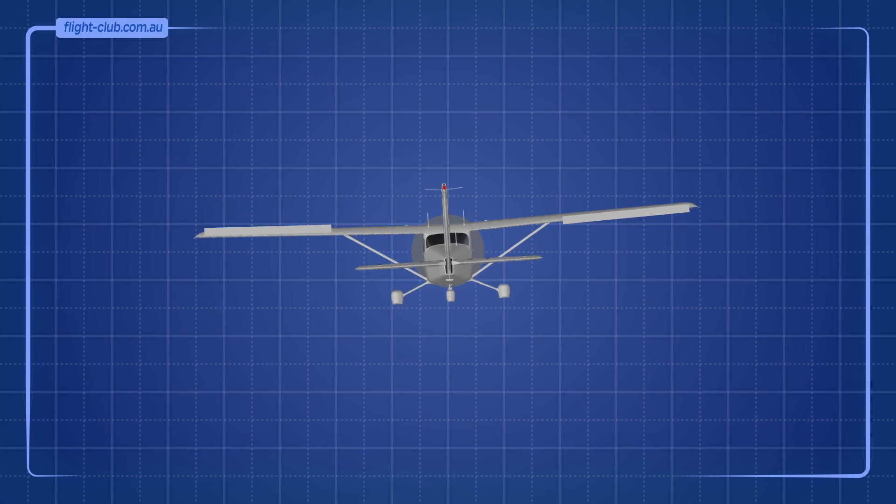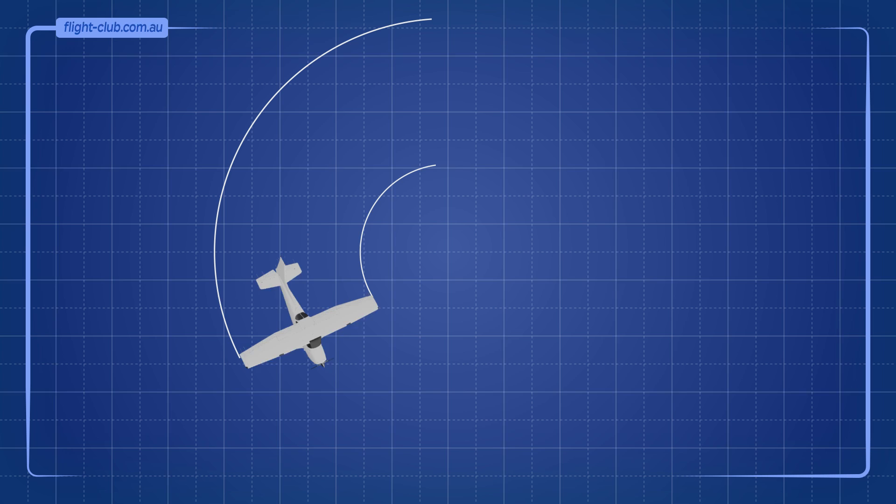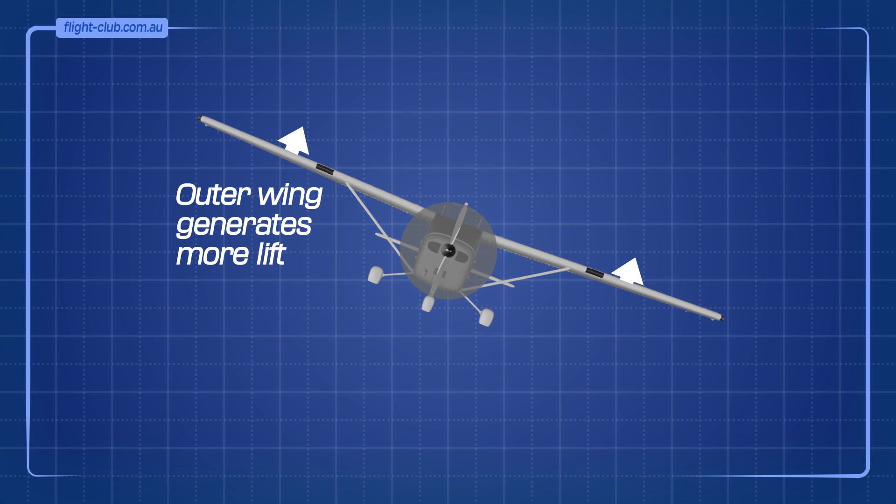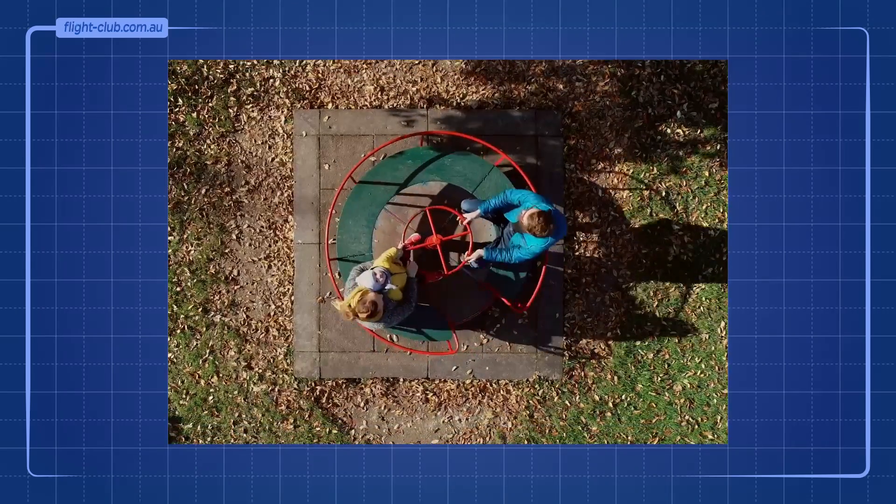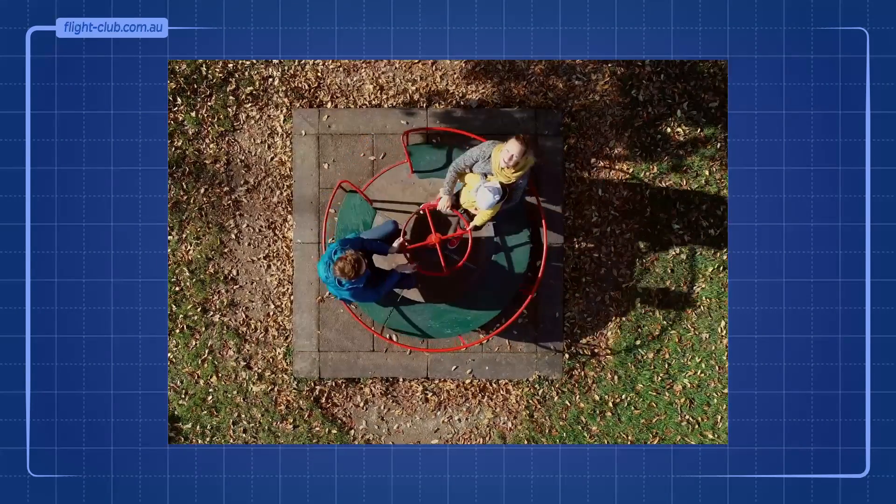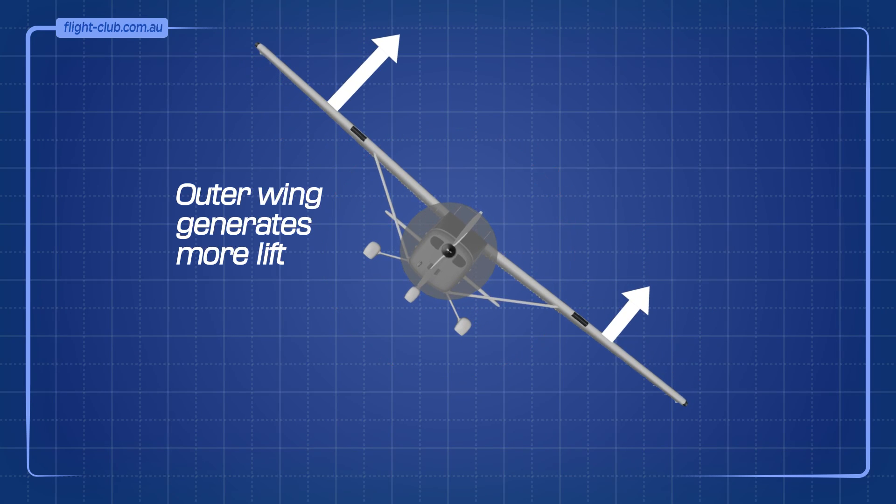You may already know that when the pilot applies a bank with ailerons and the aeroplane starts to turn, the outer wing travels faster than the inner wing and generates more lift. Just like on a merry-go-round, the outer seats really feel the speed. On an aeroplane, this causes the bank angle to want to increase more.